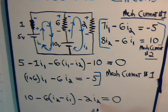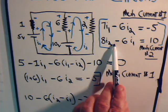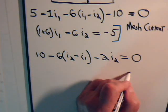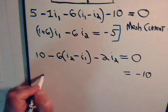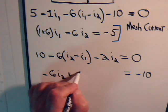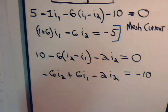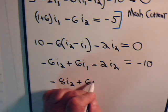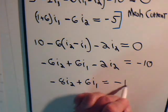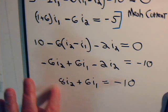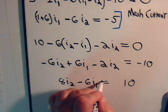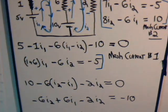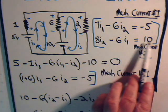And that has to equal zero. So, let's see. Let's collect our terms and see if we get the same equation that we obtained earlier using our new technique. So, here we have minus 10 on this side. Here we have minus 6I2 plus 6 times I1 minus 2 times I2. This is minus 8 times I2 plus 6I1 equals minus 10. And now multiply through by negative 1. That's plus. This is minus. And now this is plus. So, you have 8I2 minus 6I1 equals 10.